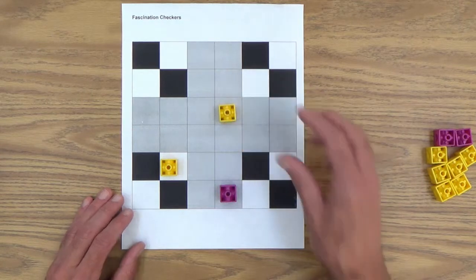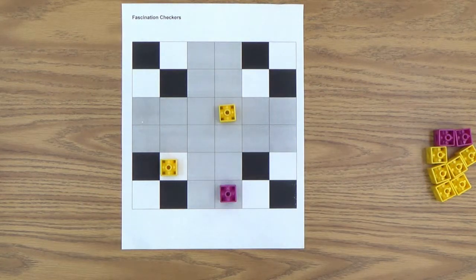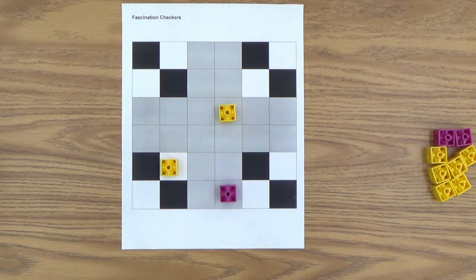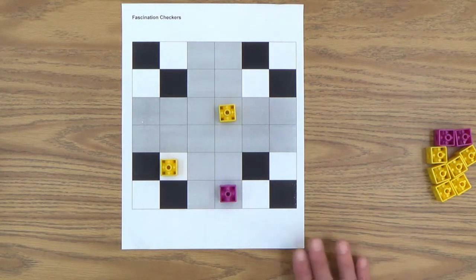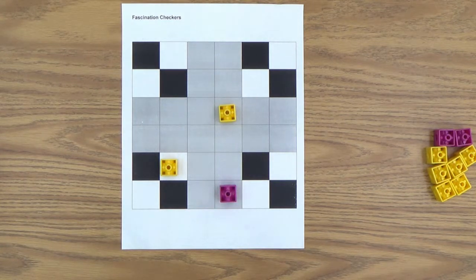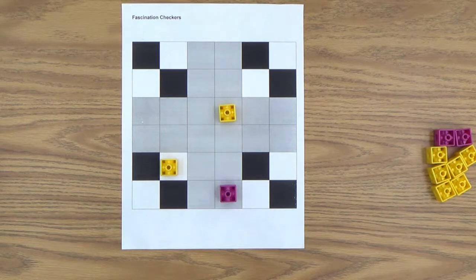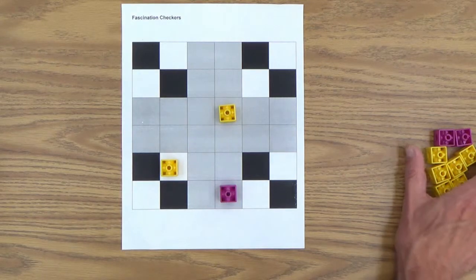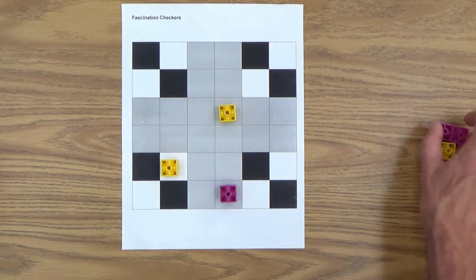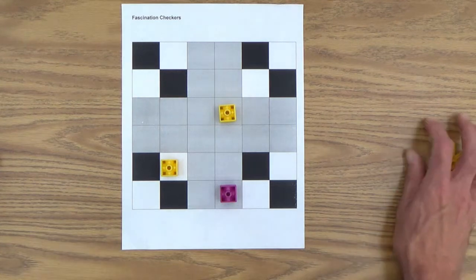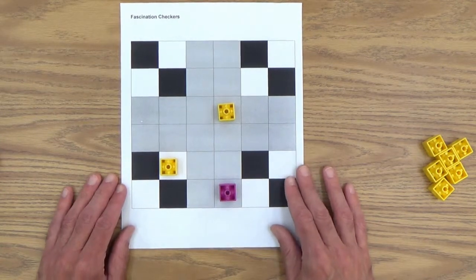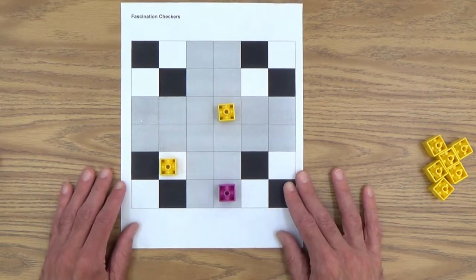And are there any more moves? No, I don't think so. There's no more jumps that could be made. So we'll go back to where I kind of ended here with the instructions. When a player can no longer jump, the other player keeps on jumping until the first player can jump again. And when no jumps are left, which is where we're at right now, the game is over. The player with the most men left on the board is the winner. And that would, of course, be the yellow. So my daughter beat me in this game. And look, I'm putting these on the wrong side. These should be over here. But yep, my daughter beat me in this game. She had two left on the board and I had one.